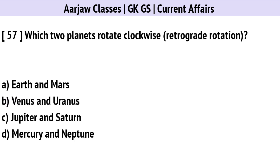Which two planets rotate clockwise? Correct option is B: Venus and Uranus.